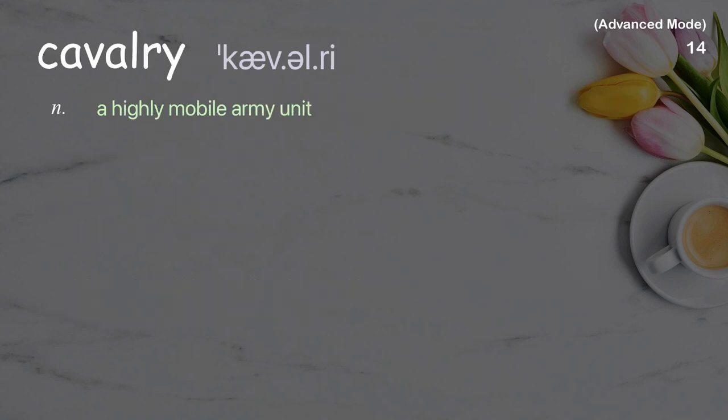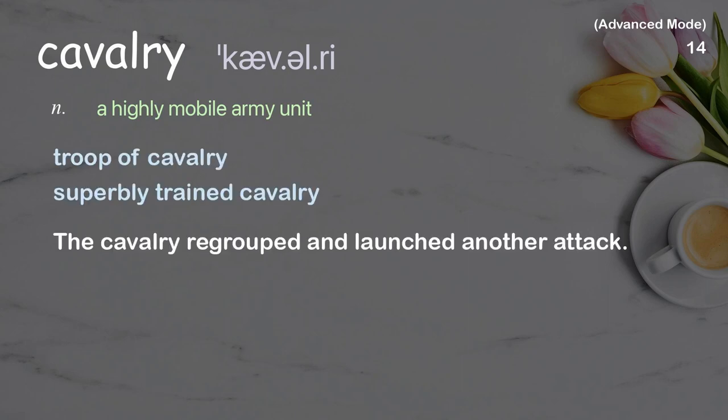Cavalry: a highly mobile army unit. Examples: troop of cavalry, superbly trained cavalry. The cavalry regrouped and launched another attack.